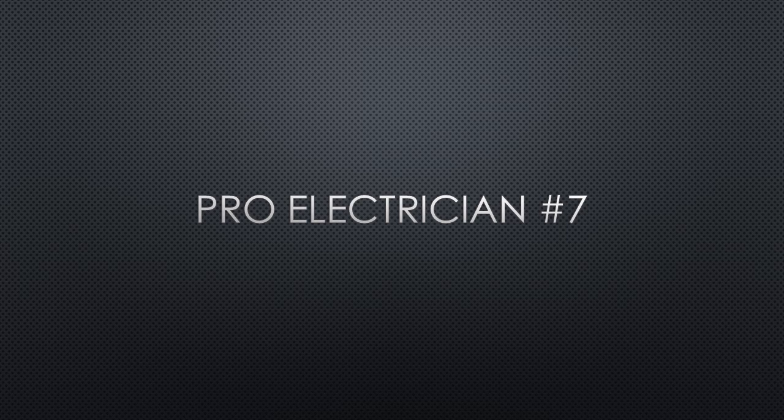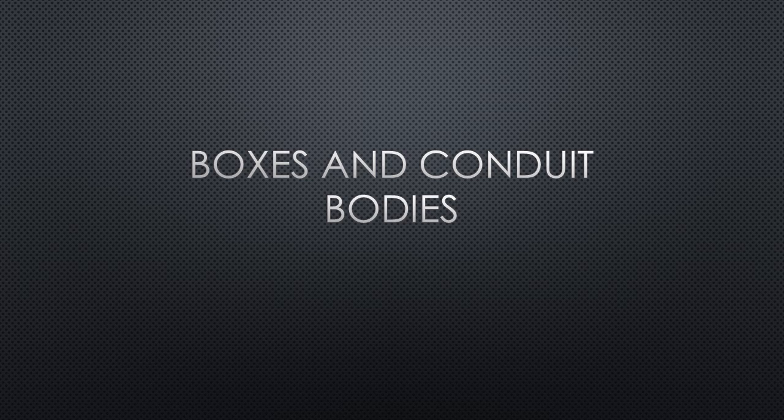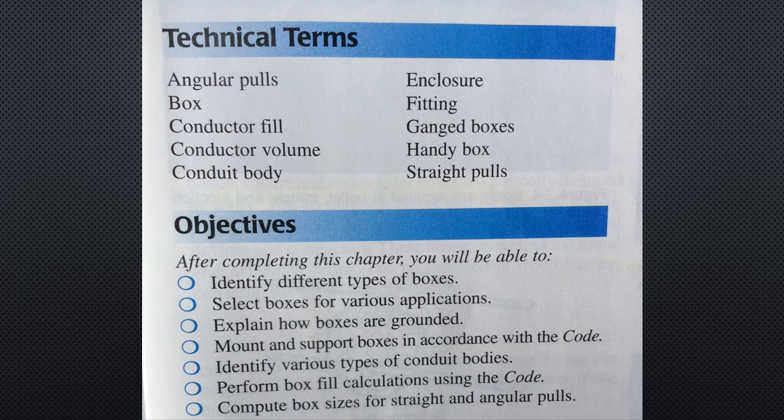This is Pro Electrician number seven. Chapter seven is about boxes and conduit bodies. Some of the technical terms encountered in this chapter are listed here.